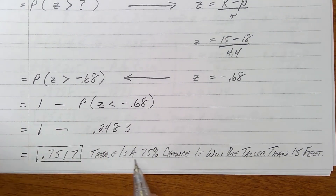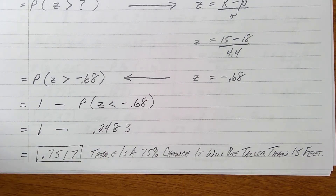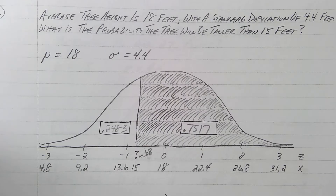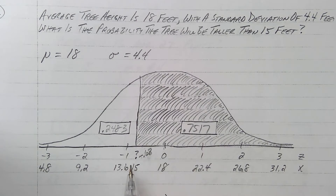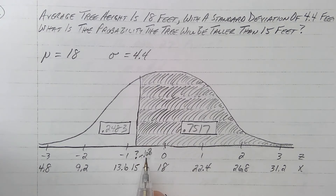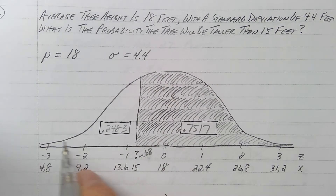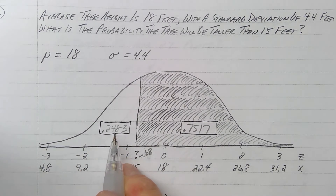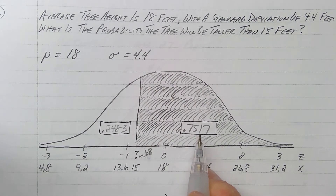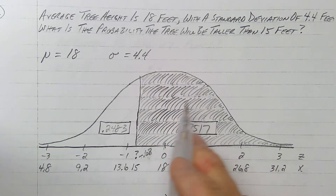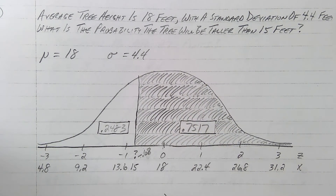I look up negative 0.68 in the Z table and get 0.2483. That's the area to the left. What I want is area to the right, so I subtract from 1: 1 minus 0.2483 equals 0.7517. There's a 75% chance I'll reach into a hat and select a tree taller than 15 feet.